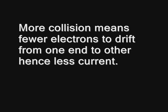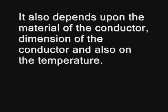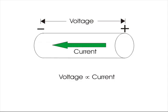Hence, we can say that electric current through a conductor not only depends upon the applied voltage across the conductor, it also depends upon the material of the conductor, dimension of the conductor, and also on the temperature. If all these factors are constant, then only electric current is directly proportional to applied voltage.